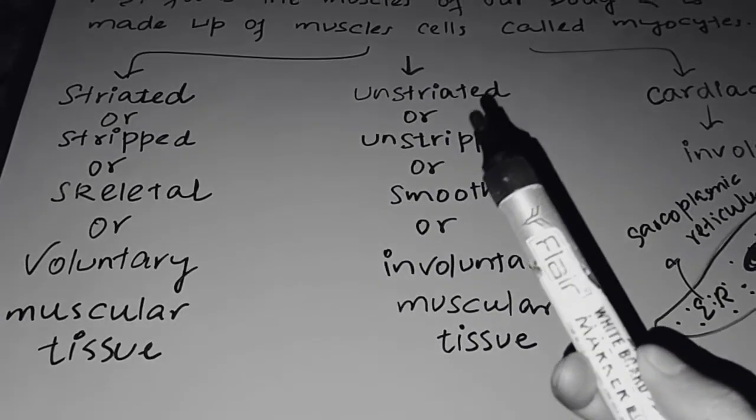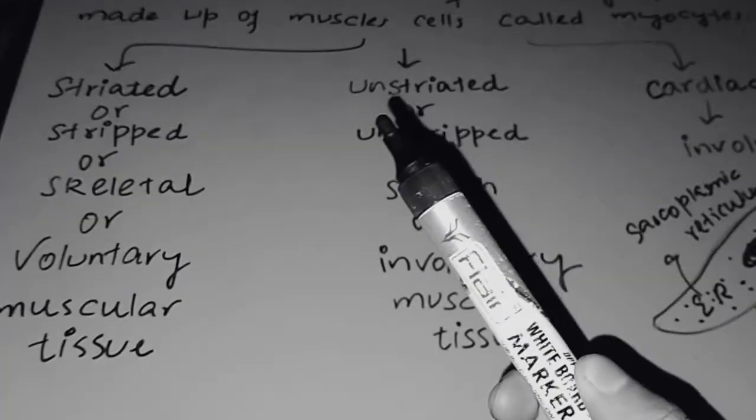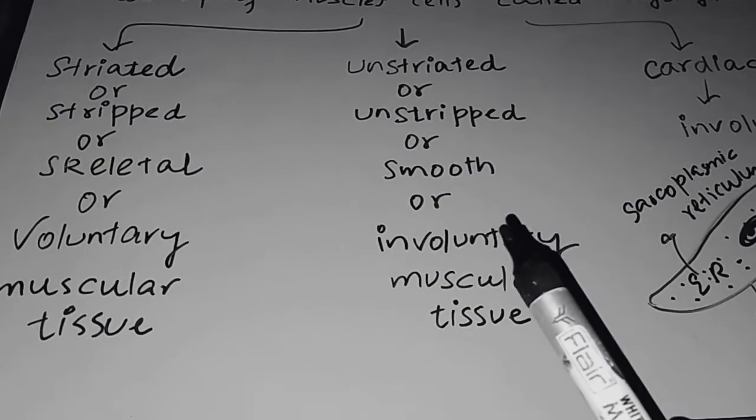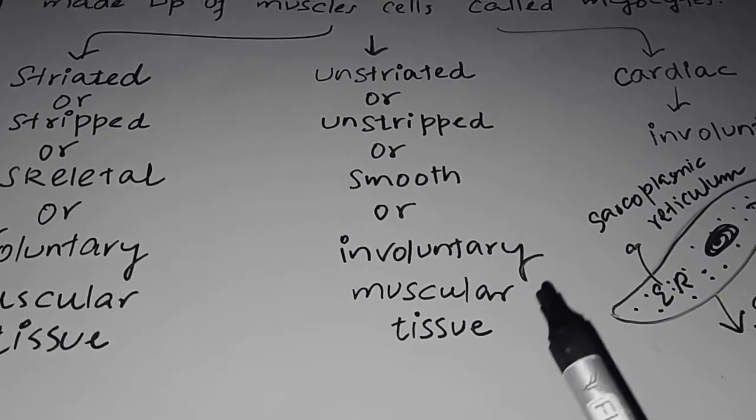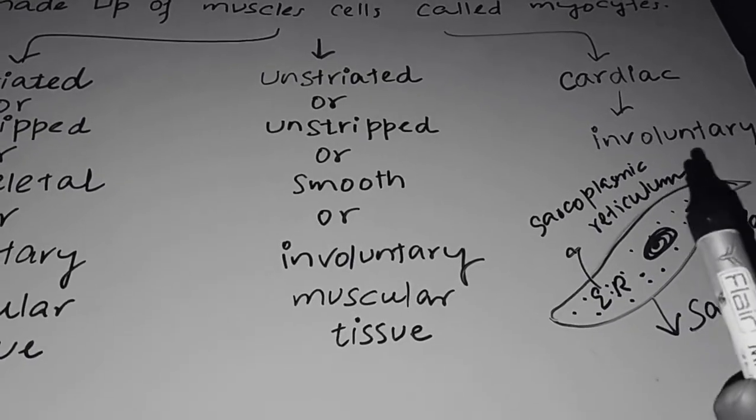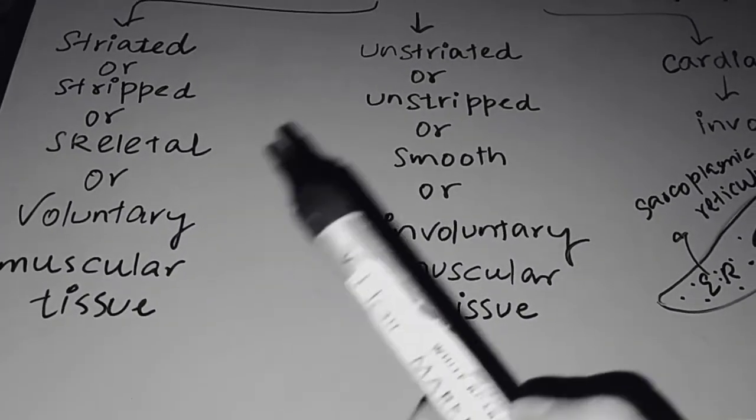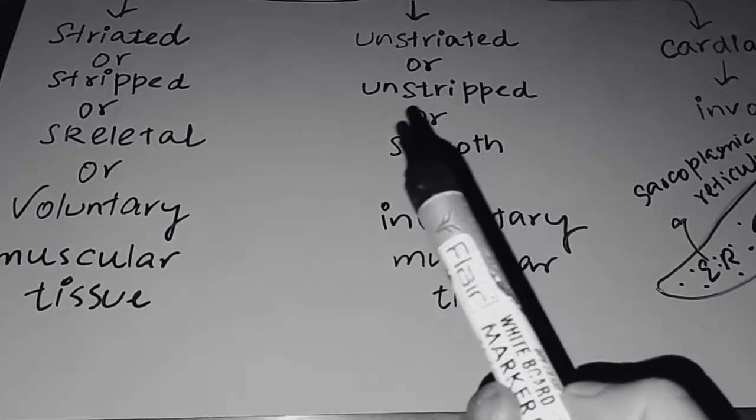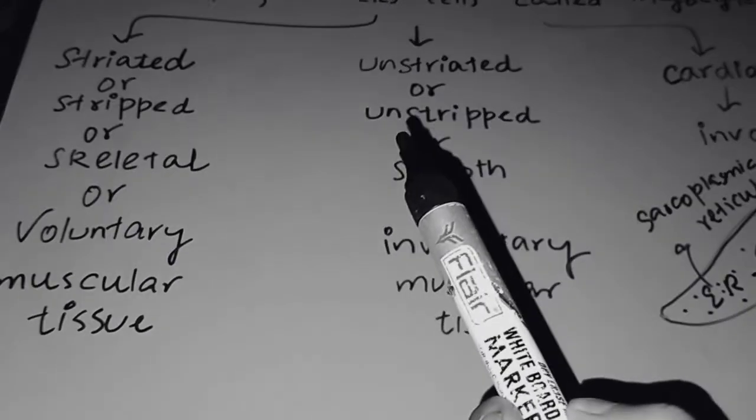Next important muscular tissue, that's unstriped or its opposite, unstriped or smooth or involuntary muscular tissue. Third is cardiac muscular tissue, or we also call it involuntary. Tomorrow we will discuss these tissue types of muscular tissue in detail.